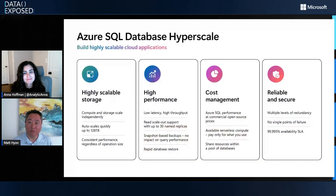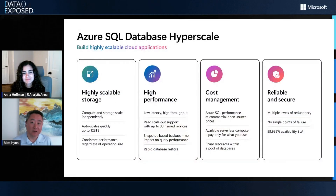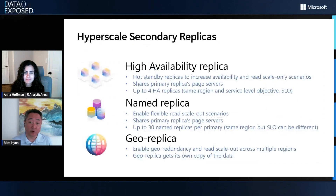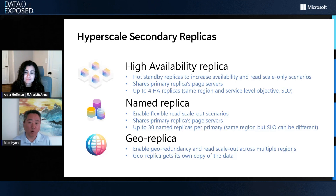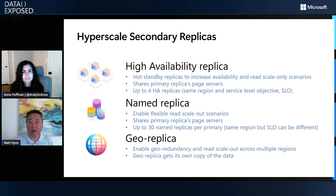Hyperscale is one of our most scalable and flexible database services in Azure. One of the key ways we deliver on that scalability is with the various replica types Hyperscale offers. Hyperscale actually offers three different types of replicas or secondaries: one being the high availability replica that gives you that hot standby capability to recover from any local faults. It also allows you to do read workloads against those replicas. But if you really want a customizable, broad read-only workload, that's where you go for named replicas. You can have up to 30 of these configured, each independently of each other, to give you that broad read-scale-out capability.